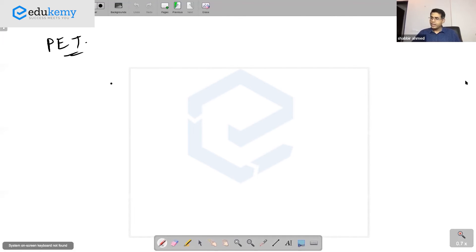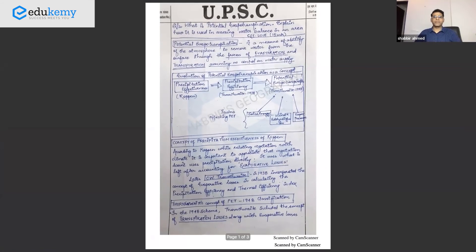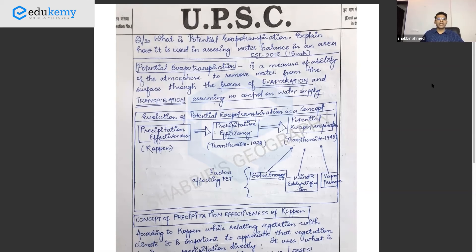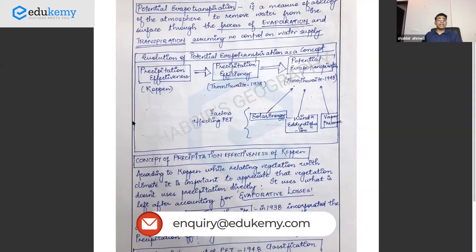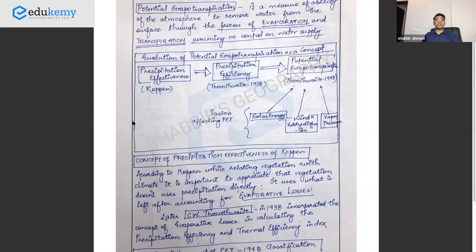Now for the question on potential evapotranspiration — 'What is potential evapotranspiration? Explain how it is used in assessing water balance in an area.' Start with a short introduction: potential evapotranspiration is a measure of the ability of the atmosphere to remove water from the surface through evaporation and transpiration, assuming no controlled water supply. As a concept, Kopen talked about precipitation effectiveness, Thornwhite introduced precipitation efficiency in 1933 and 1938, then came the potential evapotranspiration concept in 1948. Factors affecting evapotranspiration include heat energy, vapor pressure, and winds.